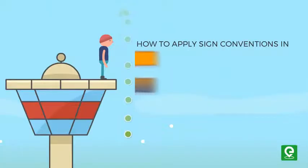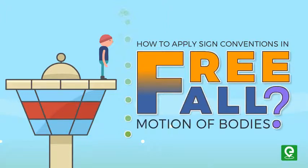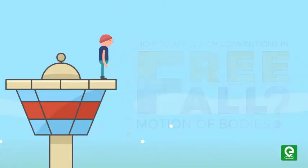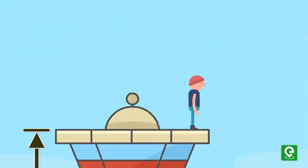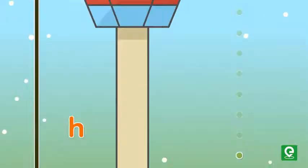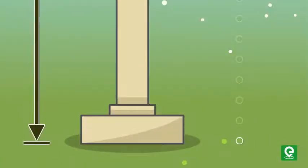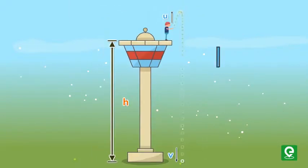How to assign sign conventions to free fall bodies. Consider a child standing on top of a tower of height h. The child throws a ball up with an initial velocity u. The ball follows its trajectory and hits the ground with final velocity v.